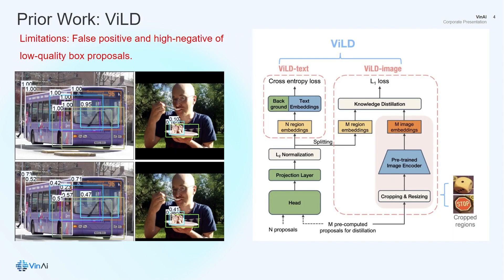With regards to prior work, there is VILD, which uses a text embedding of visual language model CLIP to enable the detection of novel objects. However, this has some limitations: low-quality proposals such as over-covered or under-covered bounding boxes can co-exist with high-quality ones with the same similarity scores to their text embeddings. For example, many under-covered bounding boxes for the bus have a high score of 1.0, because CLIP is trained on images without object location information.